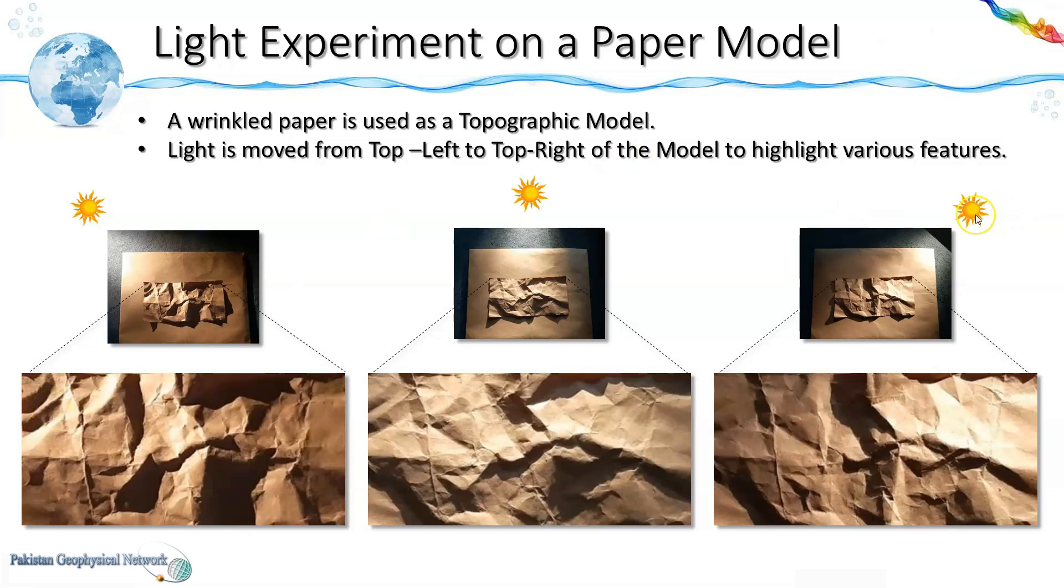While if the light source is at the top right then in the same area we can see feature oriented in this direction is highlighted. So in this way the shaded relief map is a good tool for structural interpretation of topographic data.